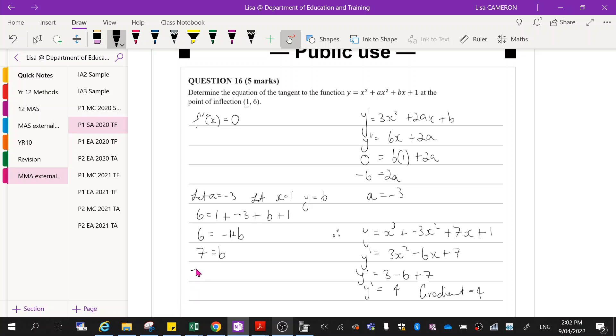So now equation of the tangent. So y equals, that's 6 equals the gradient times x plus c. Take it across. C is equal to 2.